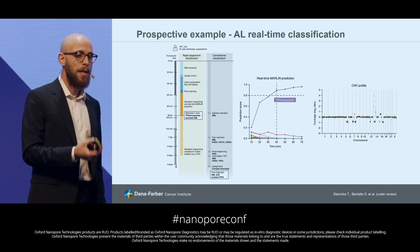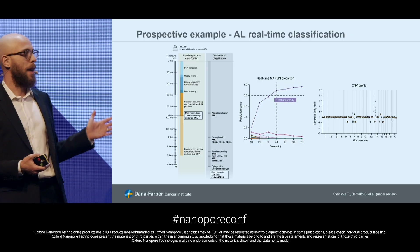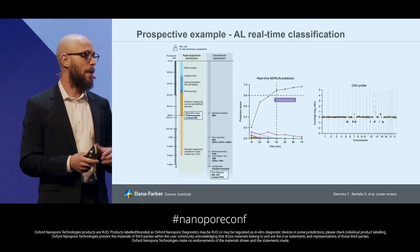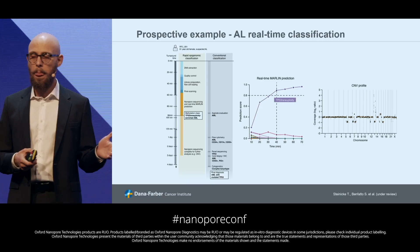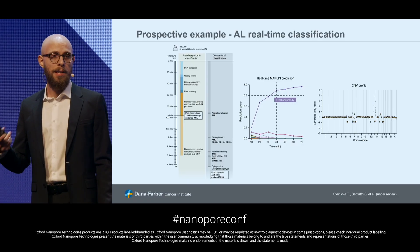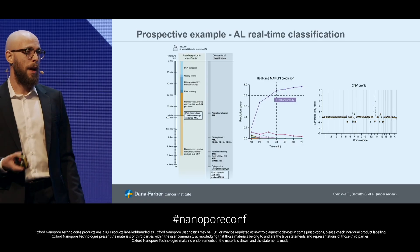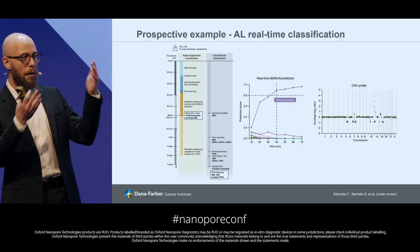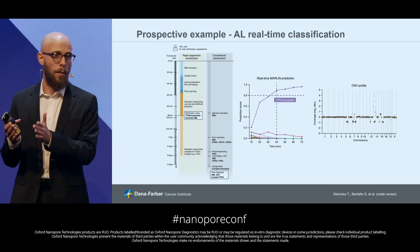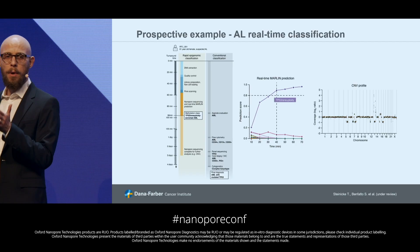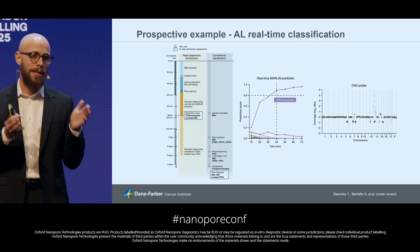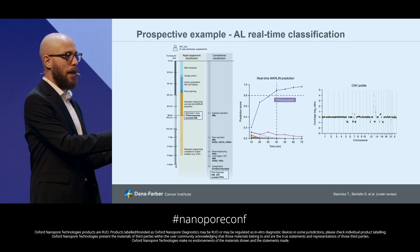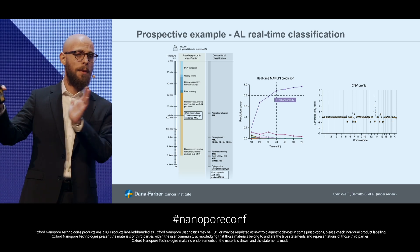At the end of the sequencing, we were also able to generate a very high-resolution copy number profile that matched well with the karyotyping. We have now done this in multiple samples, always running our framework in parallel with the conventional one. Often, in less than two hours from sample collection, we get the same classification that would otherwise take days.